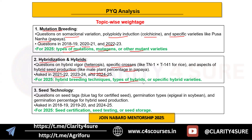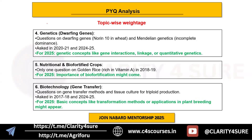The third topic is seed technology. Questions on seed tags like the blue tag for certified seed, germination type like epigeal germination in soybean, and germination percentage for hybrid seed production were asked in 2018, 2019, and 2024. For 2025, this topic has a mix of theoretical and practical aspects — questions might focus on seed certification, seed testing, or seed storage.